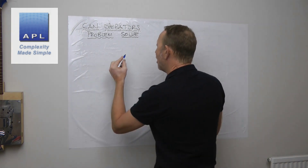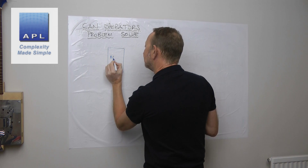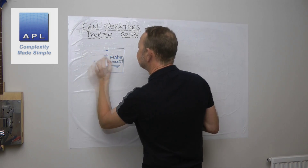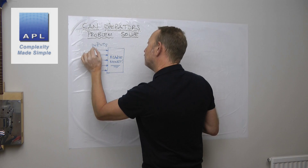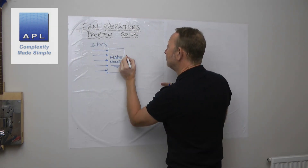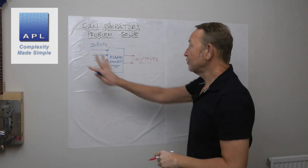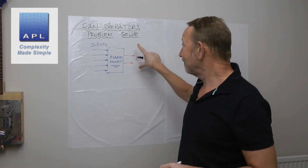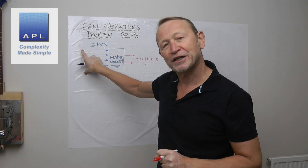Before we do that, I want to identify the idea of process thinking. You've got a process — effectively you're trying to make money — you've got inputs and you will have outputs. Problem solving and finding the root cause is always going to be on the input side of this diagram. Operators are measuring the outputs, they're seeing a problem, and the question is: can they go over to the input side and diagnose the problem?